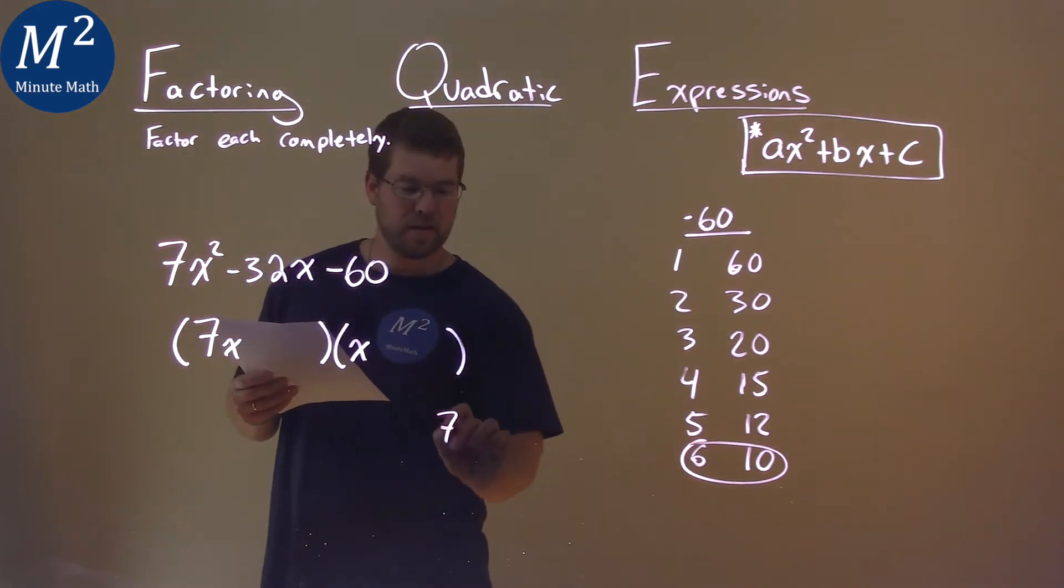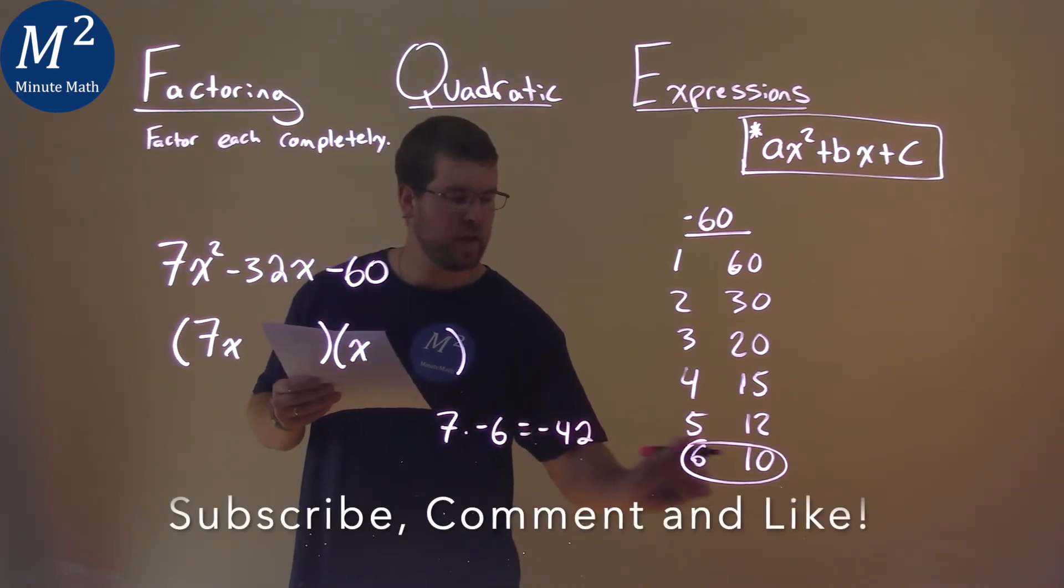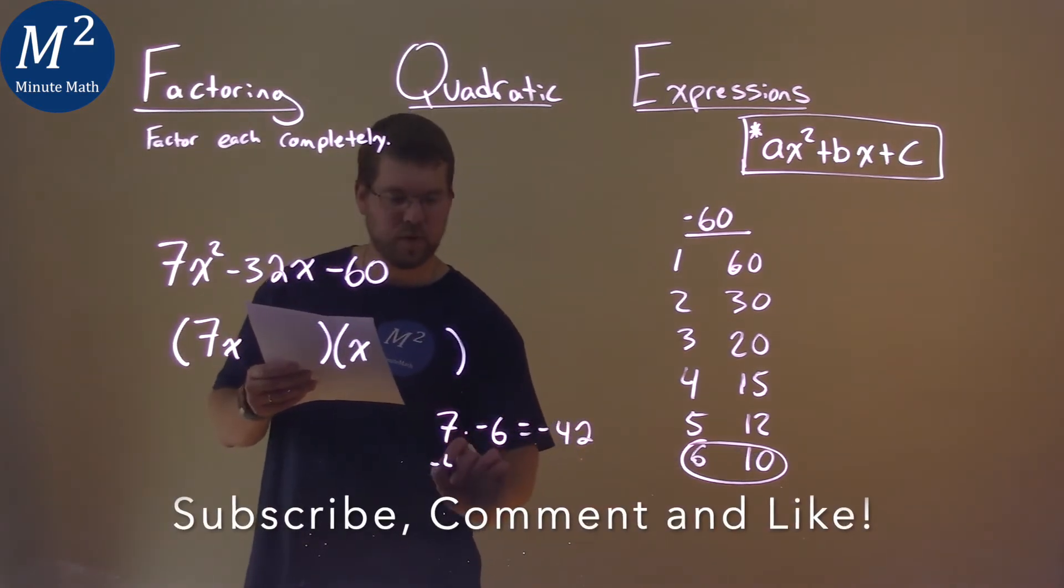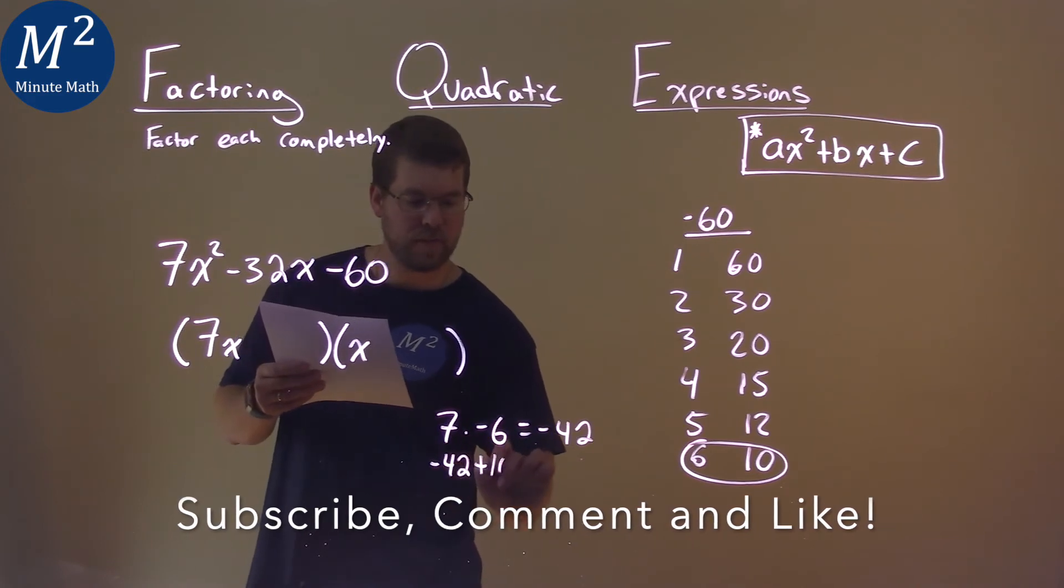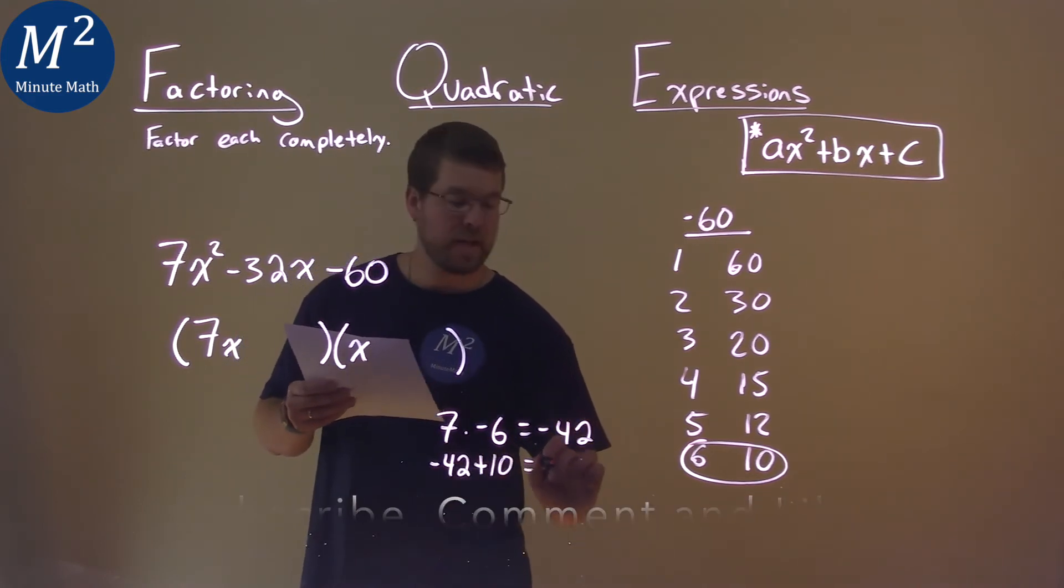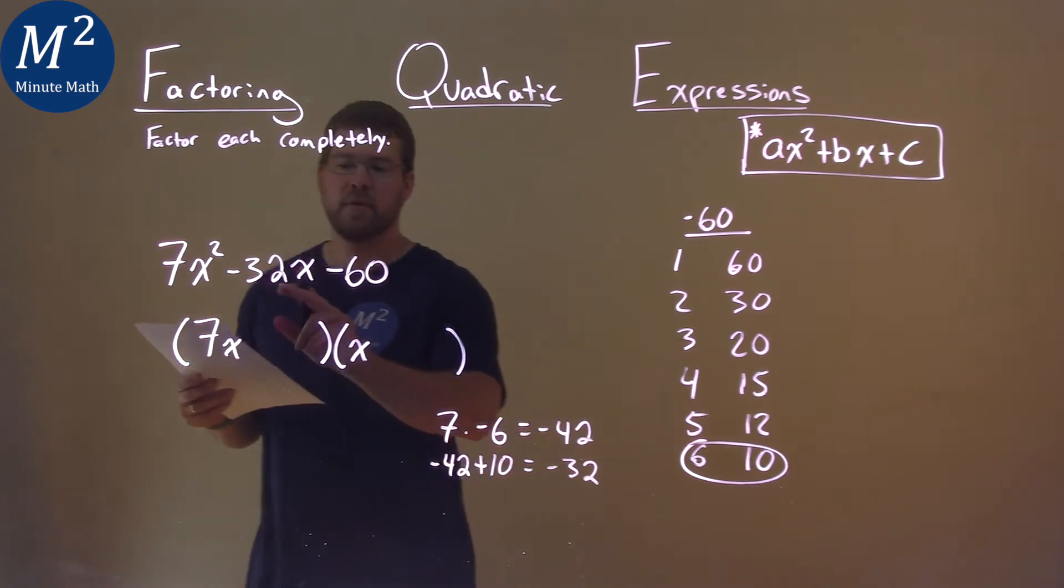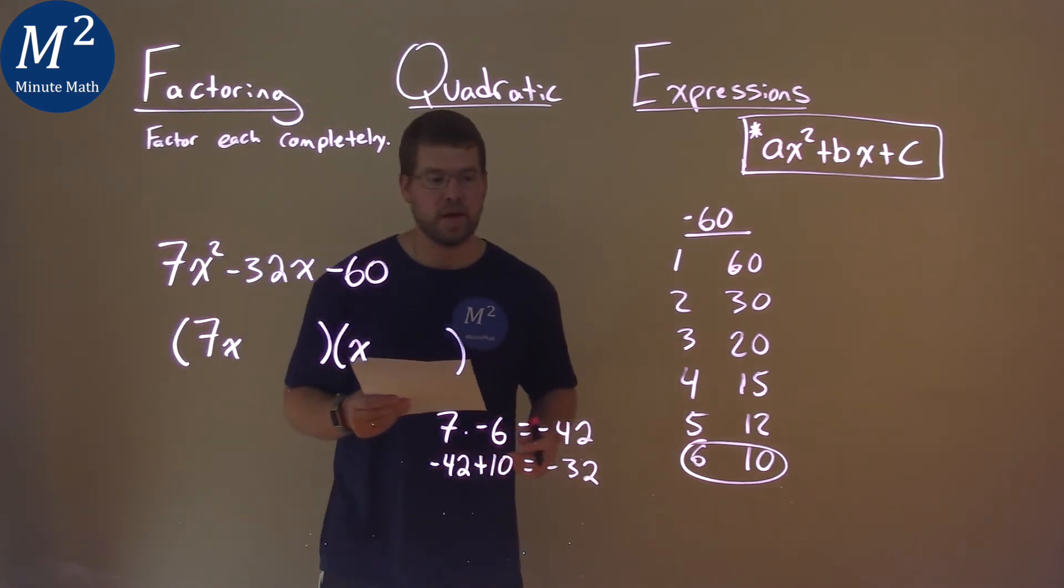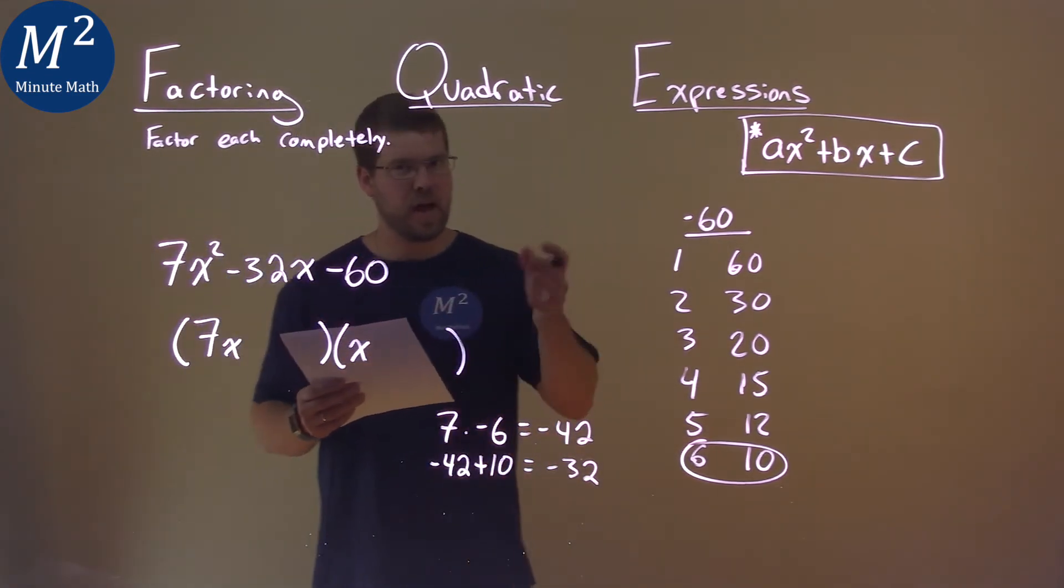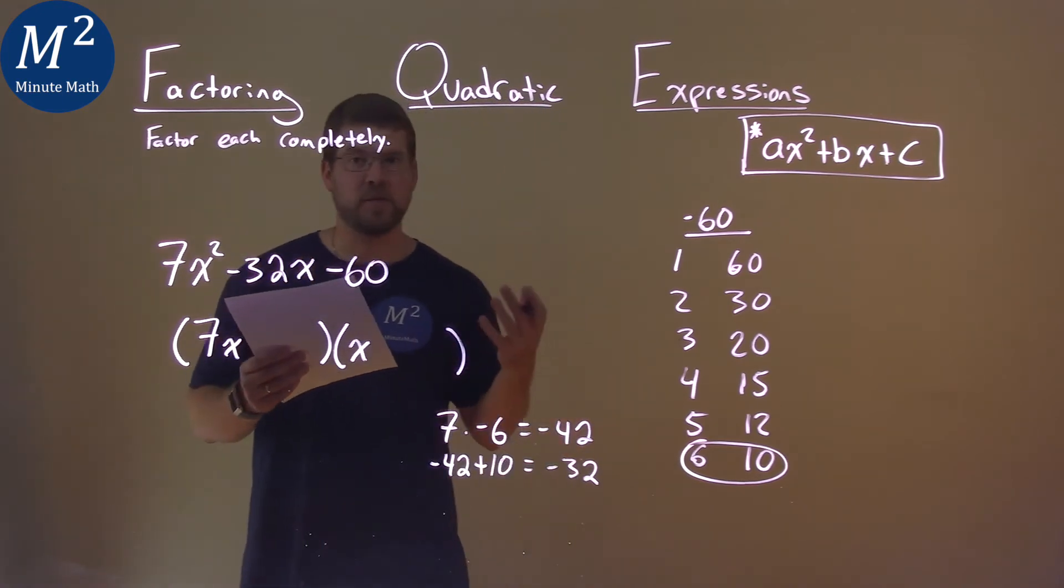So I do 7 times a negative 6, pick that one, equals a negative 42. When I add the other number, negative 42 plus 10, what do I get? That's a negative 32, and that's the b value that we were looking for. So my first educated guess got me where I needed to be.